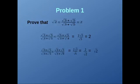Here is the first problem. We have to prove that √(3 + √5) / (√3 + √5) is greater than √2 and less than 2. This uses the basic notion that by increasing the numerator of a fraction and decreasing its denominator we increase the fraction, while by decreasing its numerator and increasing its denominator we decrease the fraction.